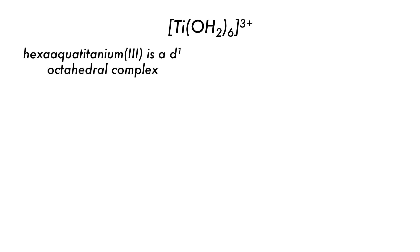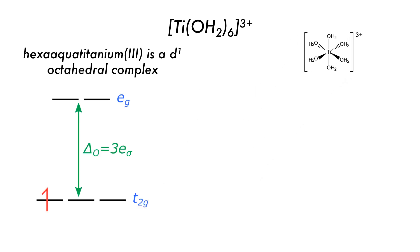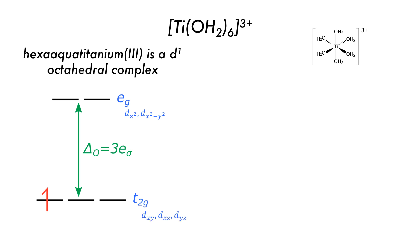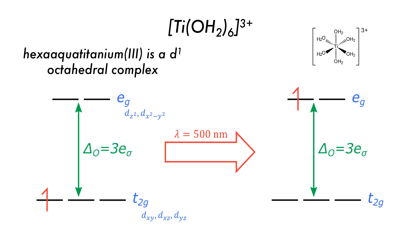A simple example is the titanium-3-plus complex, hexa-aqua-titanium-3. Since water is a neutral ligand, titanium has the plus-3 oxidation state, leaving one d-electron. It is an octahedral compound, meaning we can split the metal d-orbitals into the metal-ligand antibonding EG set — dz² and dx²−y² — and the metal-ligand bonding T2G set. From the angular overlap model, the separation between bonding and antibonding is 3 sigma. Looking at the absorption spectrum of hexa-aqua-titanium-3+, you get a broad absorption centred at about 500 nm, corresponding to the movement of an electron from the T2G orbital up to the EG orbital — going from a lower-energy orbital to a higher-energy orbital, or the first excited state.